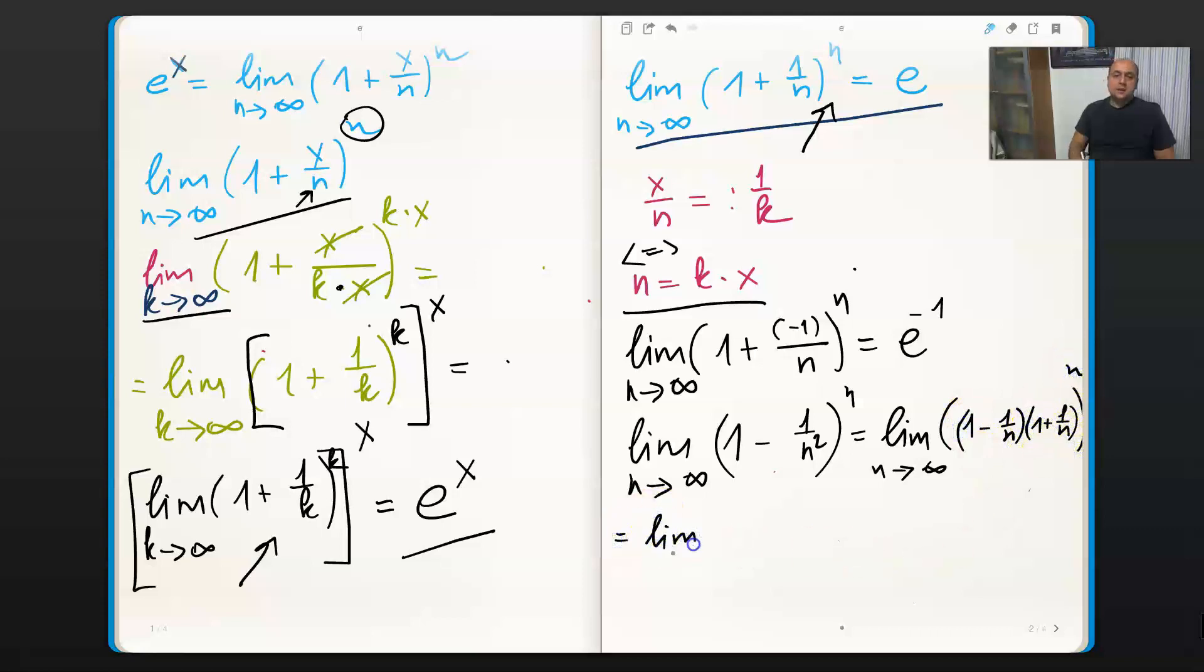And now we can split it into the product of two limits. So we would have 1 minus 1 divided by n to the power of n times the limit n towards infinity, 1 plus 1 divided by n to the power of n. We are using the product rule of the limits.